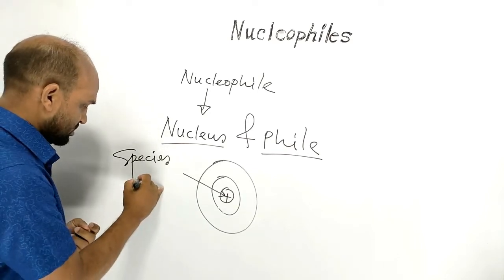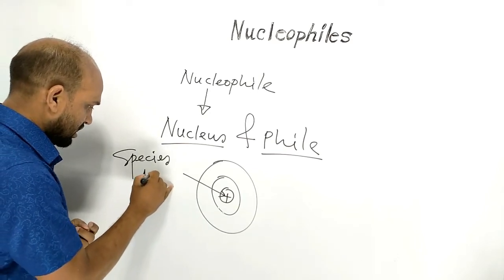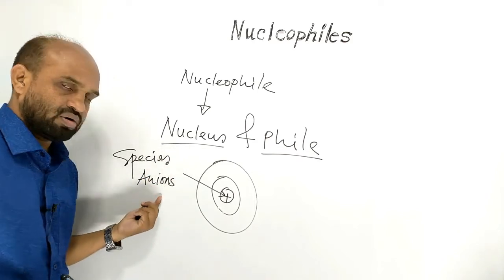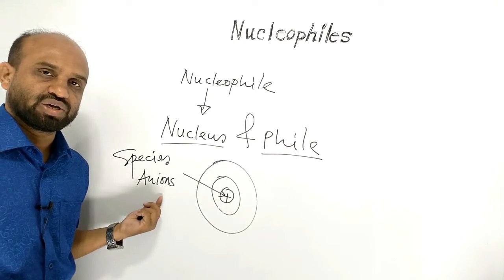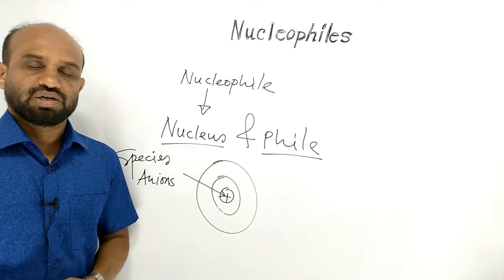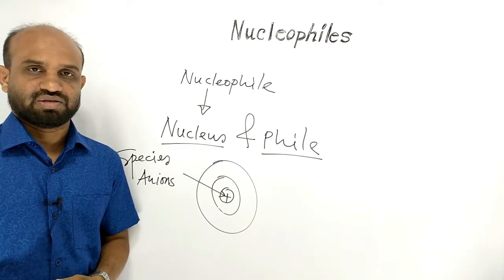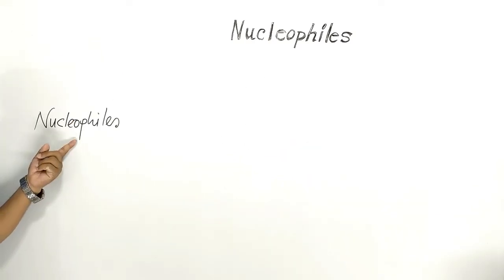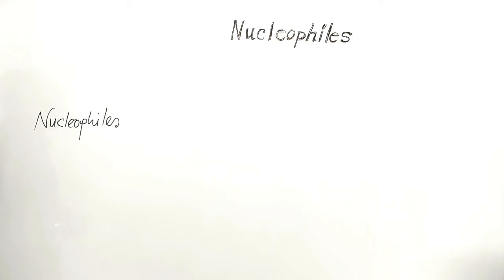The species that are nucleus loving are called nucleophiles. The species like anions or electronically rich molecules having tendency to attack the nucleus are called nucleophiles. Anions or negatively charged molecules having tendency to attack a positively charged portion are called nucleophiles.